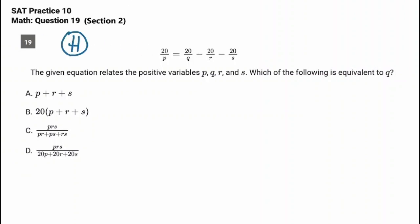Got an equation. The given equation relates the positive variables P, Q, R, and S. Which of the following is equivalent to Q? So we're looking for Q. Write it down and circle it.